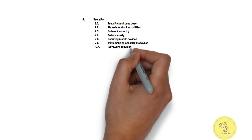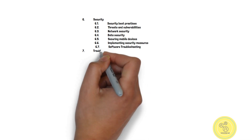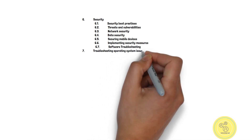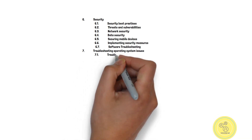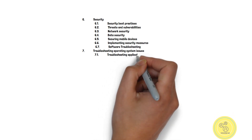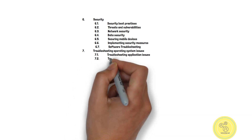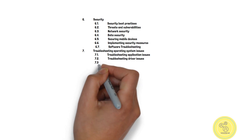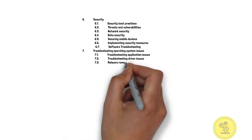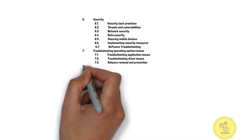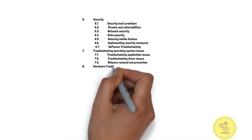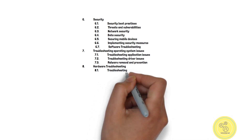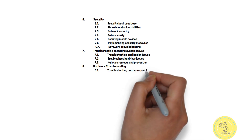Implementing security measures is covered in the course. Software troubleshooting is also a major section: troubleshooting operating system issues, troubleshooting application issues, troubleshooting drivers, and malware removal and prevention — including virus removal.